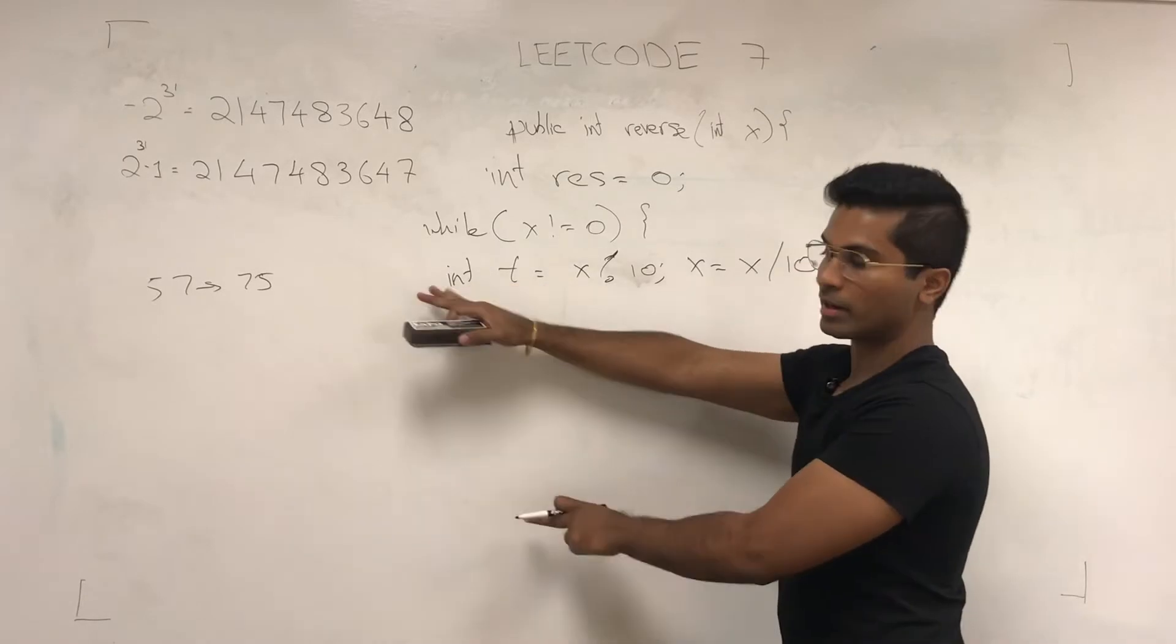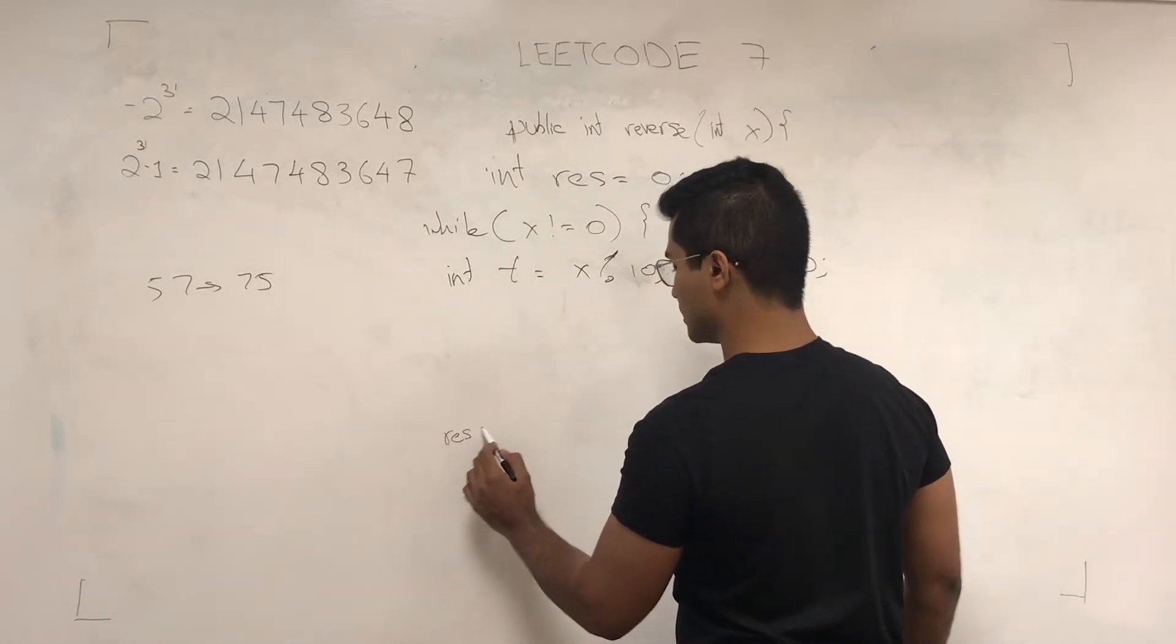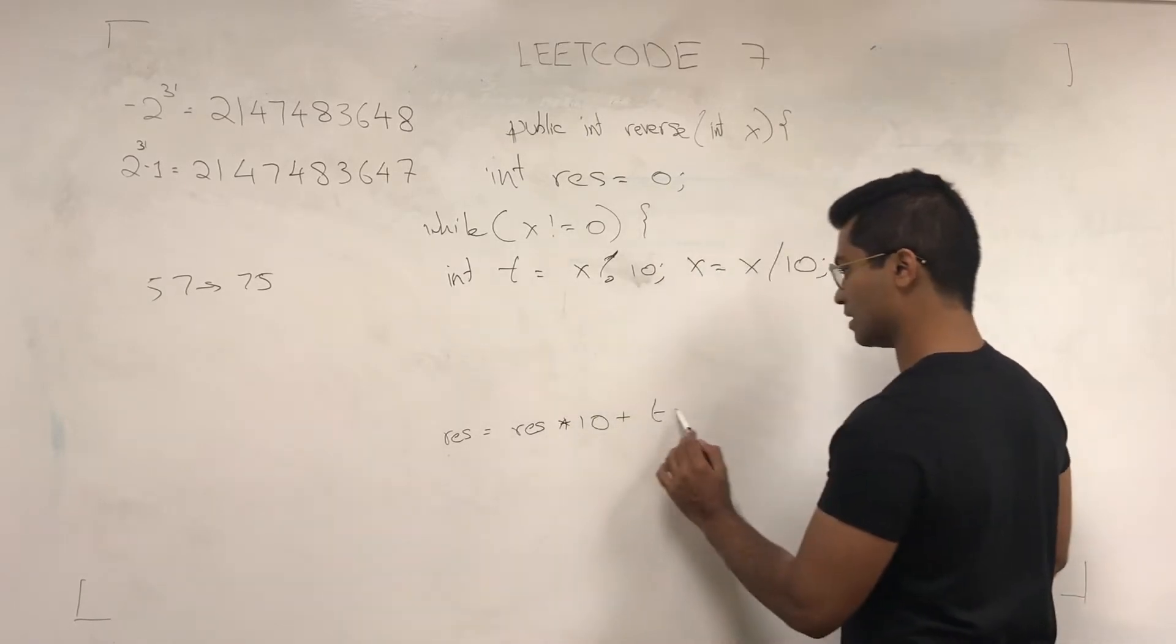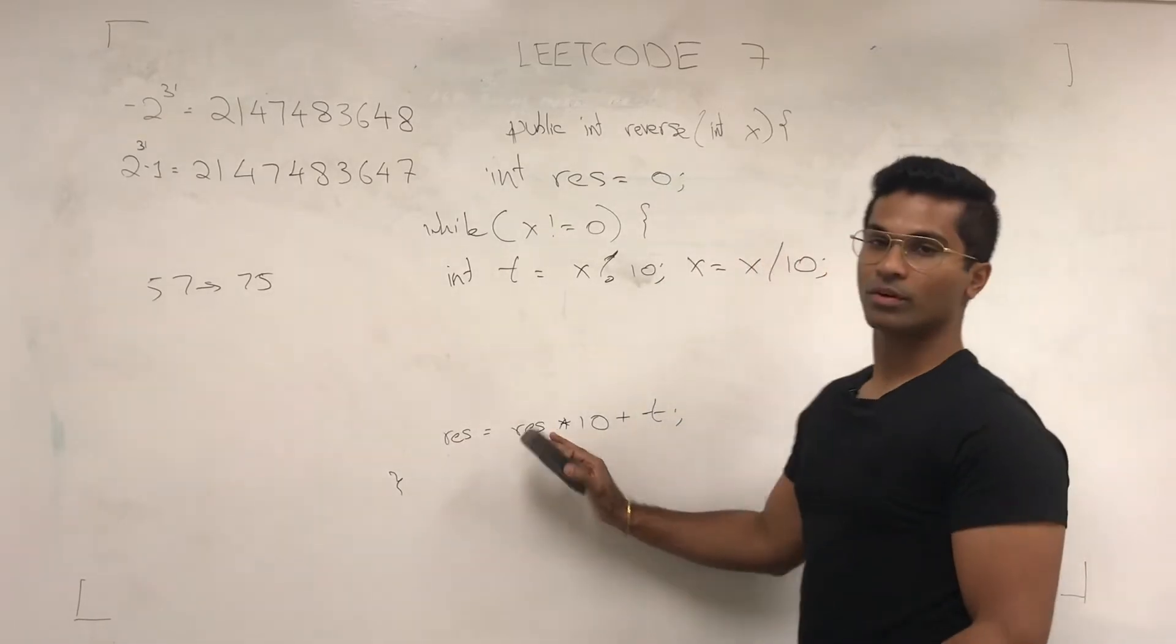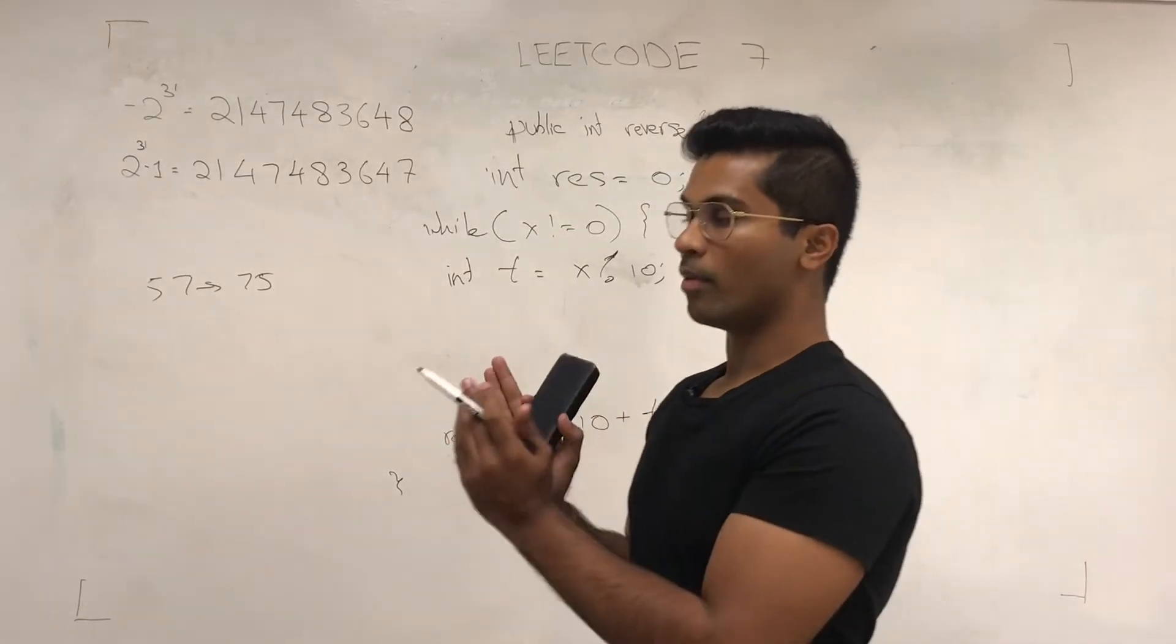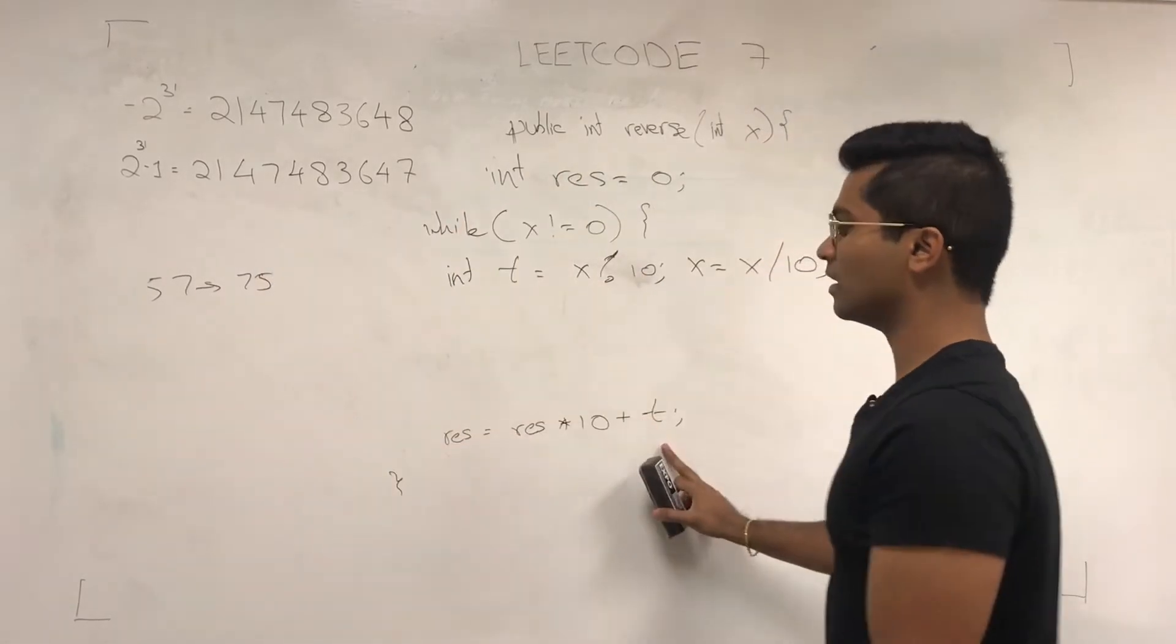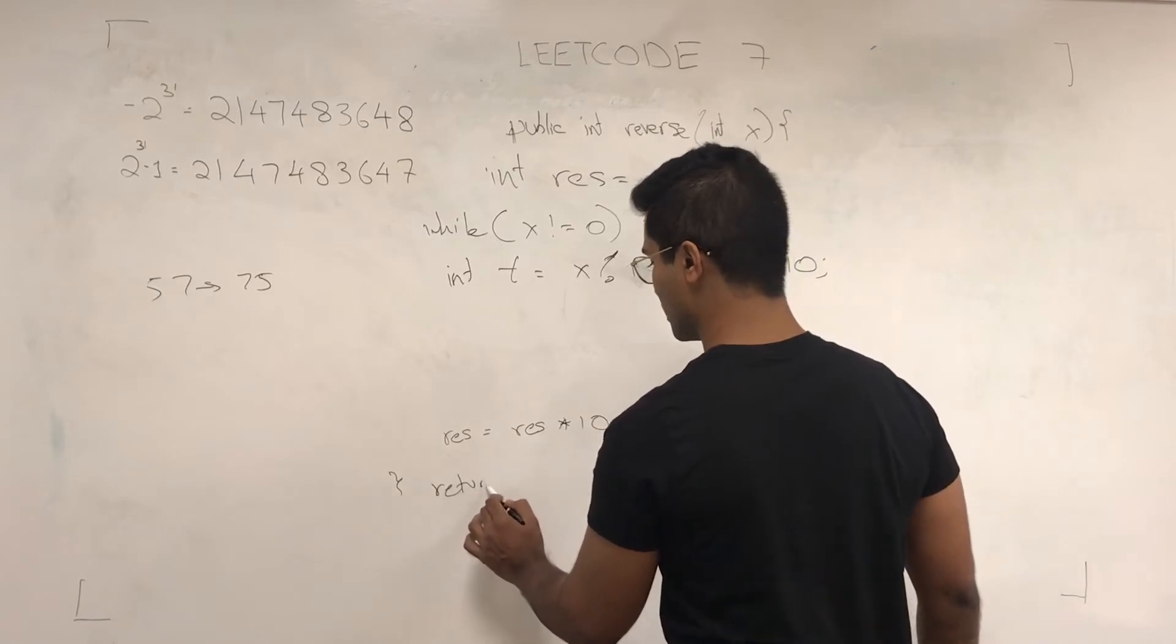Now I'm going to leave this blank for now and come back to it. Now res is going to be res times 10 plus t. What this basically does is it shifts over whatever res was initially by 10 times, and then it adds the t which goes in the ones place. And then we return res.